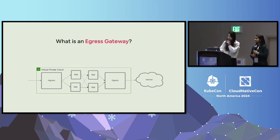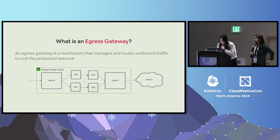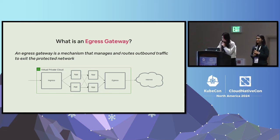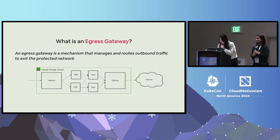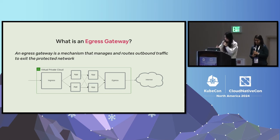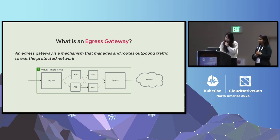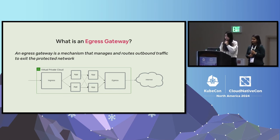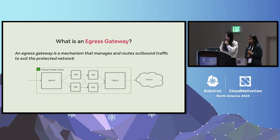Let's quickly go through what is an egress gateway. By definition, an egress gateway is a mechanism that manages and routes outbound traffic from the network. It's a paired concept with ingress — egress takes outbound traffic, so egress is just the opposite direction, taking care of traffic leaving your network. An internet egress gateway specifically manages traffic going to the public internet.